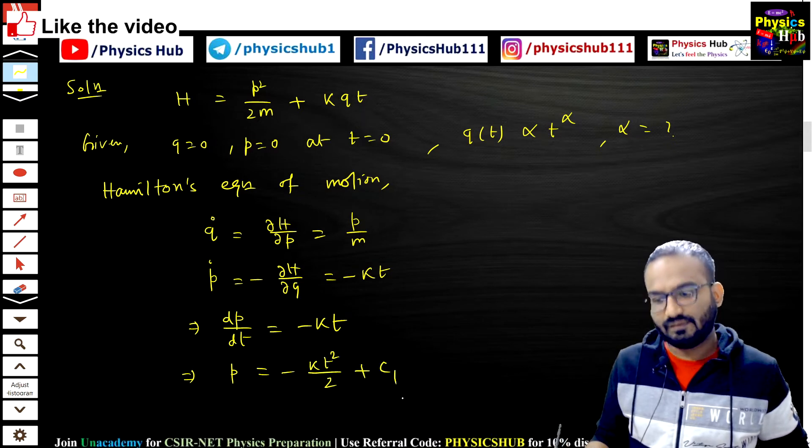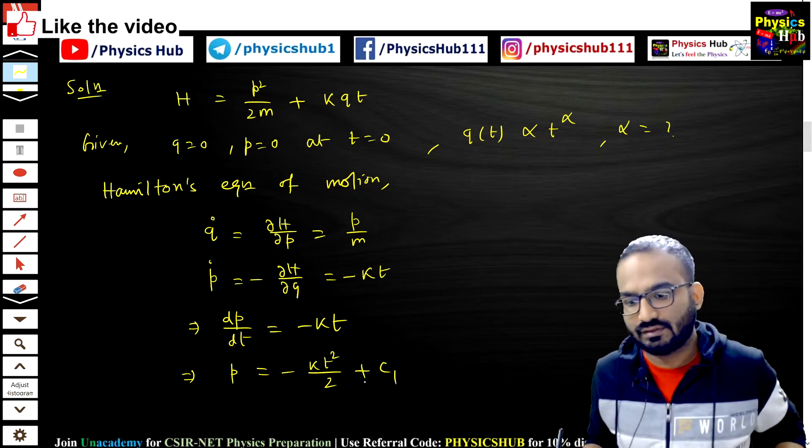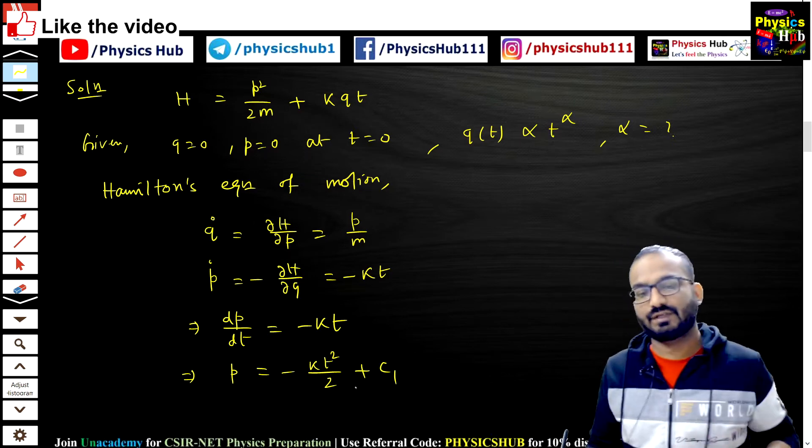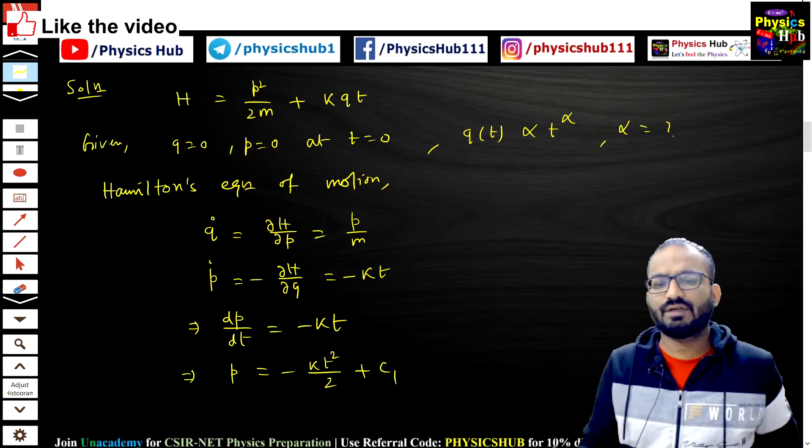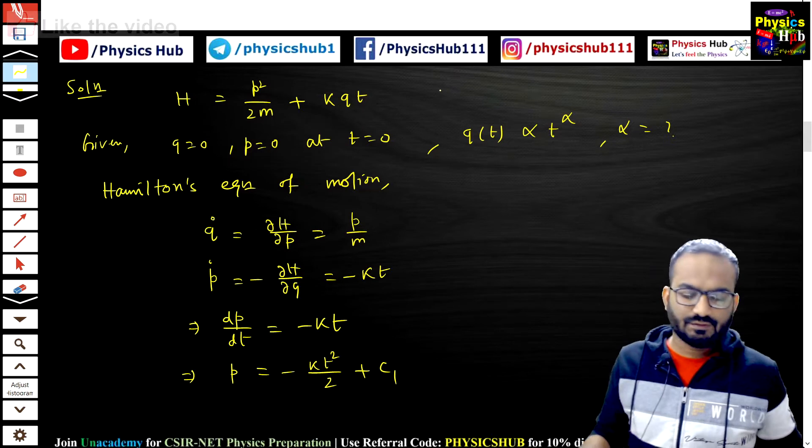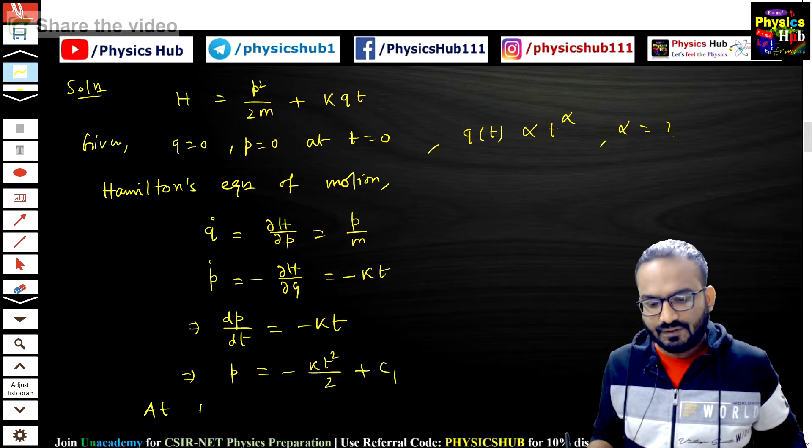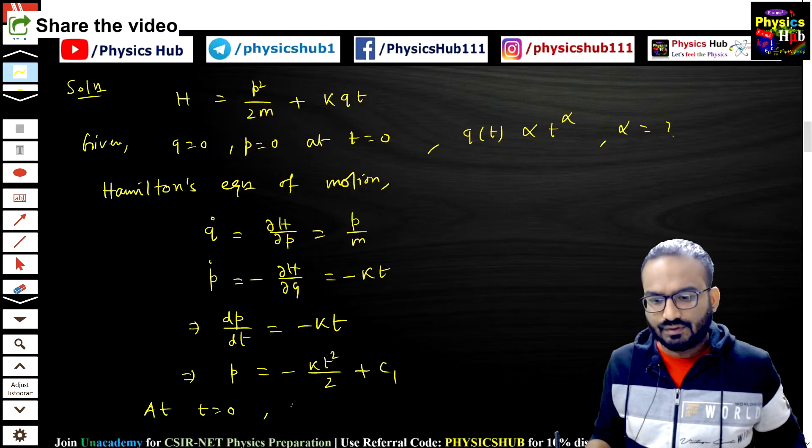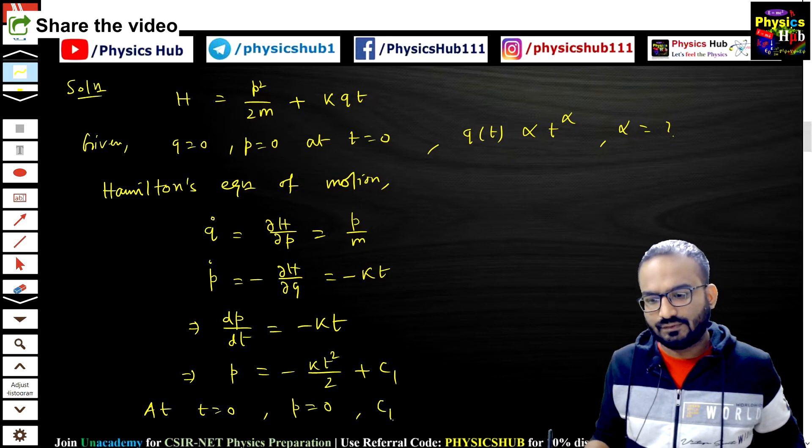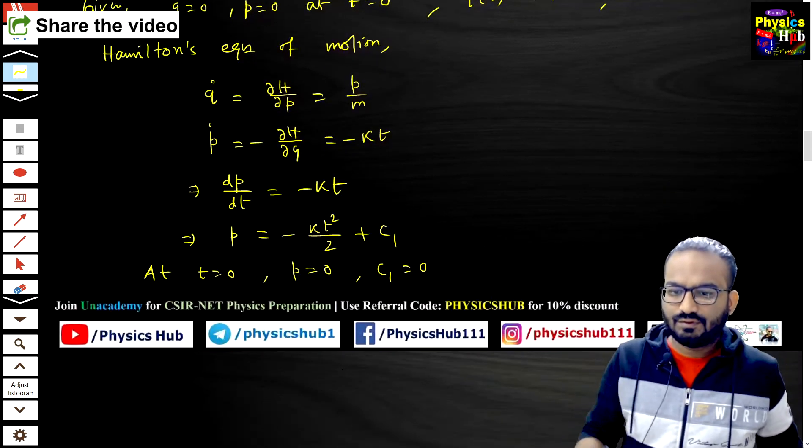From here we get p equals minus k t square upon 2 plus c1, an integration constant c1. And we can easily remove it using the initial conditions given to you. At t equals 0, your p equals 0, that gives you c1 equals 0.